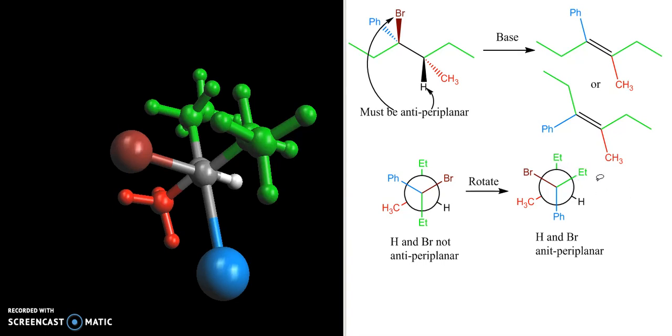So these two ethyl groups in our product will be cis to one another. The phenyl group and the CH3 will also be cis to one another. And this product right here is the one that is formed.